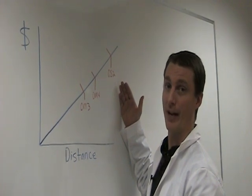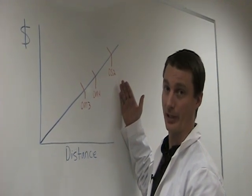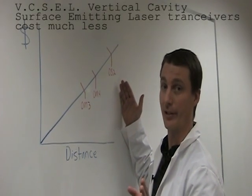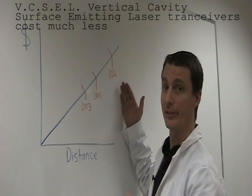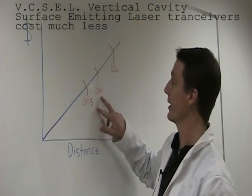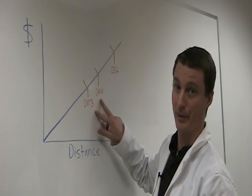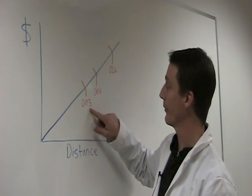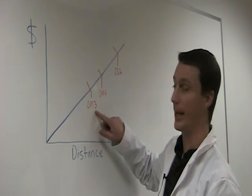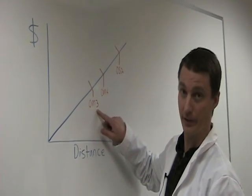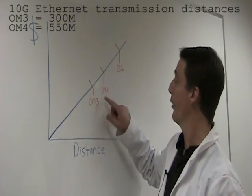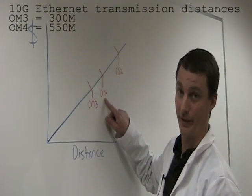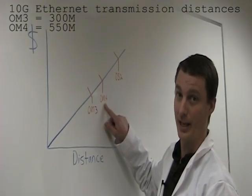And that's why with VCSEL technology — VCSEL stands for Vertical Cavity Surface Emitting Laser — that brings down the cost and utilizes multi-mode fiber. OM3, for example, can run 10 gigabit at 300 meters, and OM4 can run 10 gigabit at 550 meters.